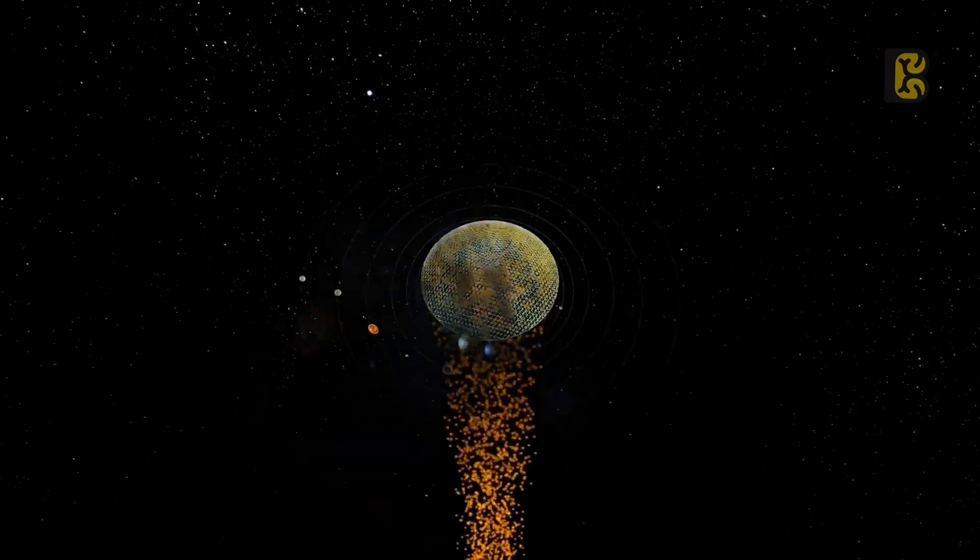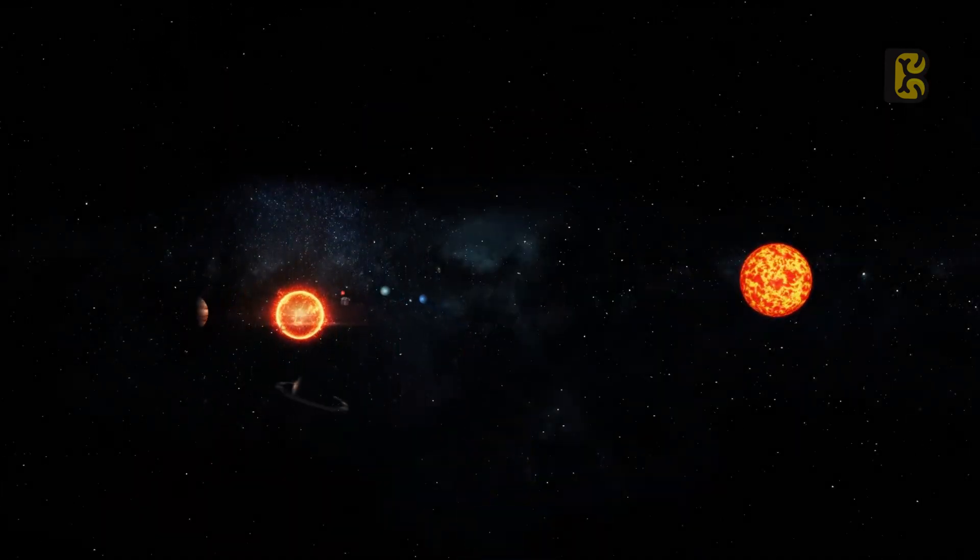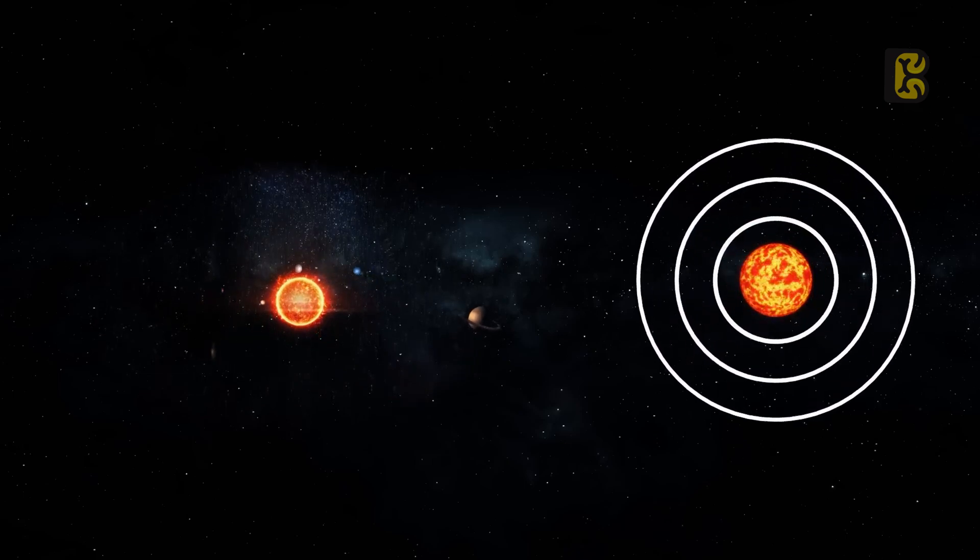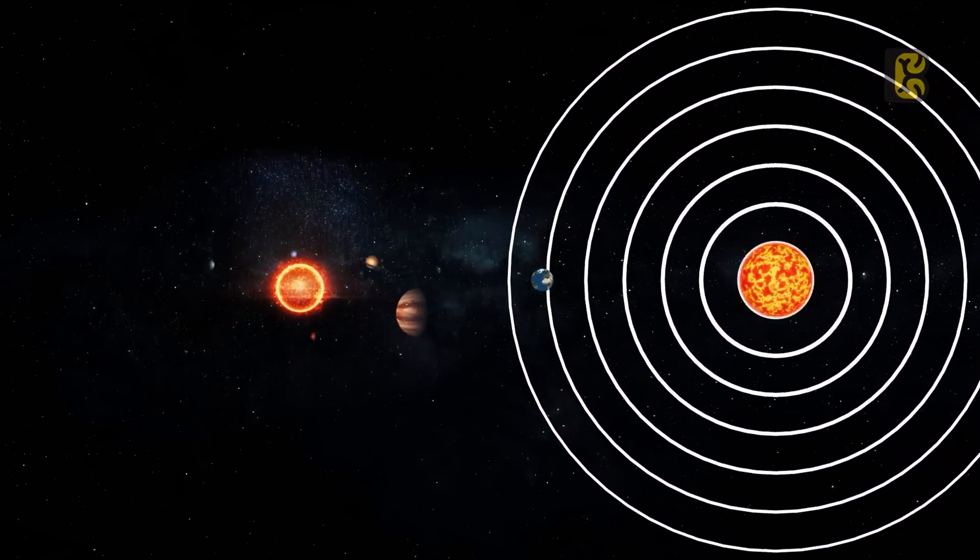During this movement, we will eventually get close enough to the new star that its gravity will overtake the Sun's gravity and pull Earth towards it. If we get pulled into the habitable zone of this new star, then even without a single second without a parent star, Earth becomes nearly deathless.